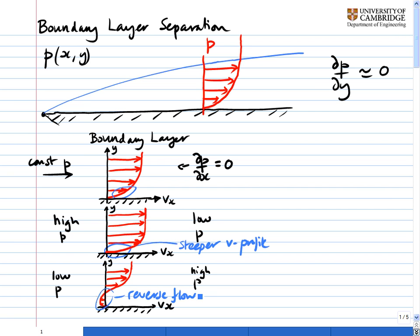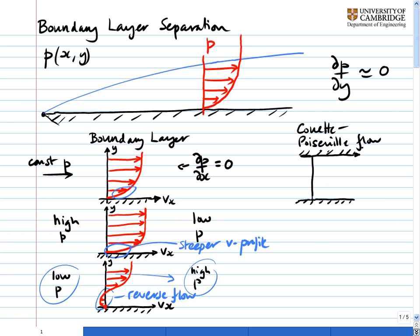What we have is what we call an adverse pressure gradient — going from low pressure to high pressure — causing a little bit of reverse flow at the bottom of the boundary layer. Earlier on we looked at Couette flow and Poiseuille flow, that is the flow between two flat plates with the top plate moving and the bottom plate stationary, with or without a pressure gradient.